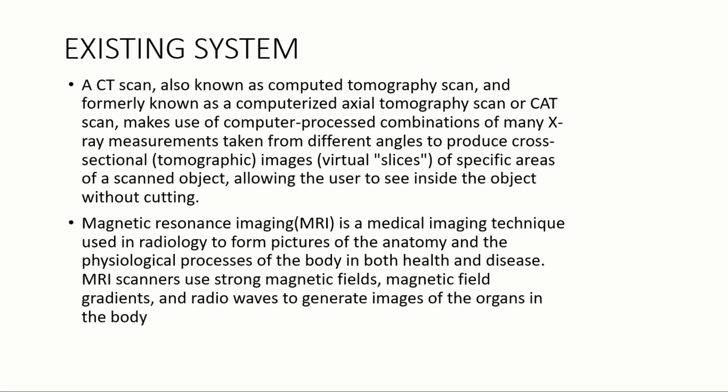In the existing system, we use two scans: CT scan and MRA scan. CT scan is otherwise called as computer tomography scan, or formerly called as CAT scan. It makes use of computer processing combinations of many X-ray measurements taken from different angles to produce cross-sectional images of specific areas of a scanned object, allowing the user to see inside the object without cutting. MRA scan, otherwise called as magnetic resonance imaging, is a medical imaging technique used in radiology to form pictures of the anatomic and physiographic processes of the body in both health and disease. MRA scanners use magnetic fields, magnetic field gradients, and radio waves to generate images of the organs in the body.